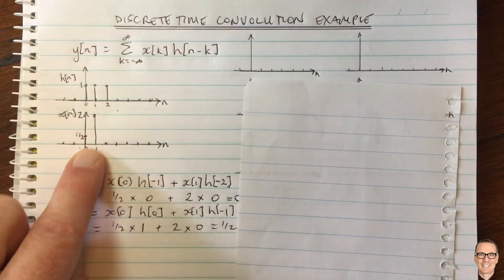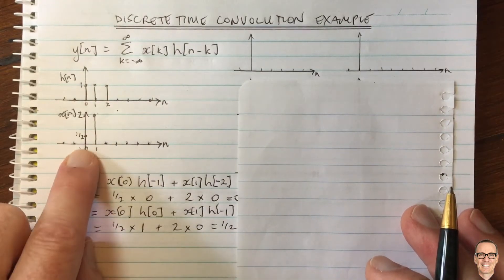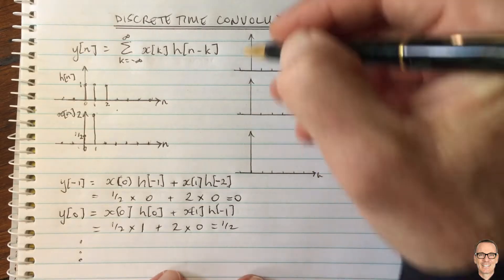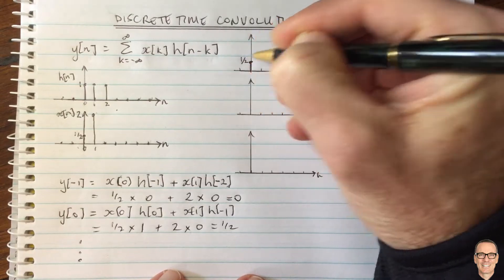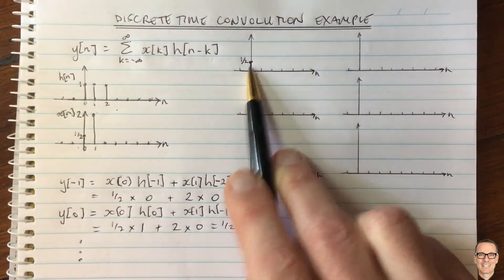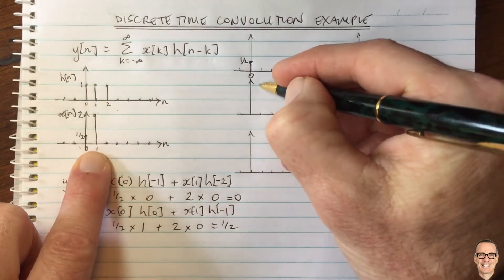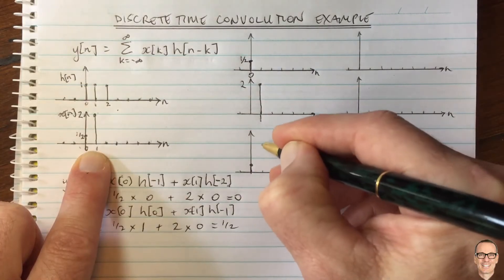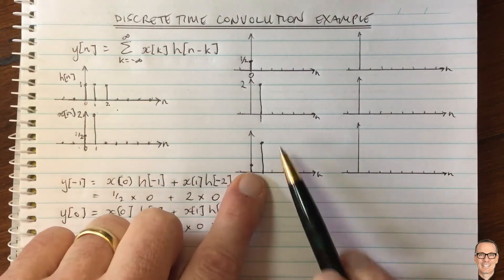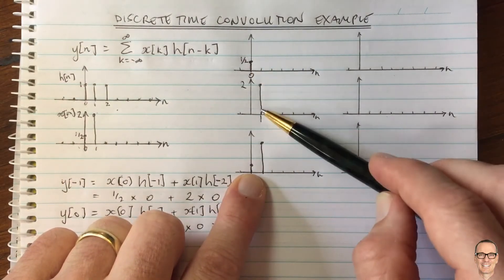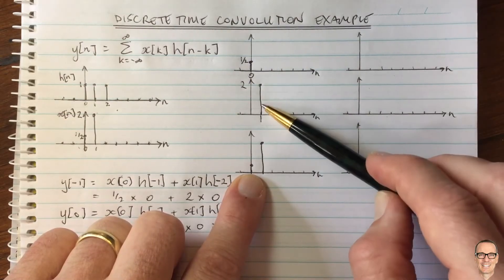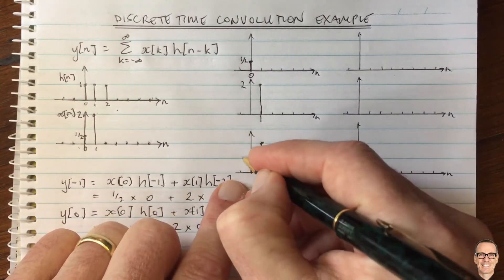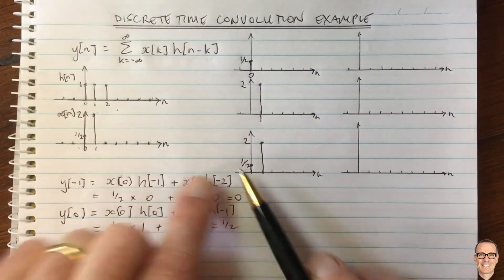Let's break the input into two separate impulse components: one at time zero and another at time one. We now have a component that is an impulse at time zero of height one half, and a second component that is an impulse at time one of height two. Because the system is linear and these delta functions are orthogonal basis functions — each delta function offset in time is orthogonal to the others — we can treat each one separately and then add them up.